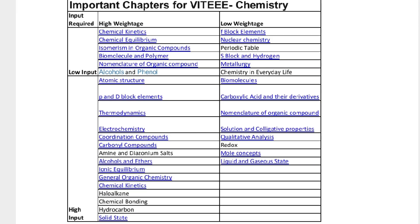In Chemistry, high weightage topics include: chemical kinetics, chemical equilibrium, isomerism in organic chemistry, biomolecules, polymers, nomenclature of organic compounds, and alcohols and phenols. These are high weightage topics where you can start studying. For low weightage topics: f-block elements, nuclear chemistry, periodic table, hydrogen, metallurgy, and chemistry in everyday life.